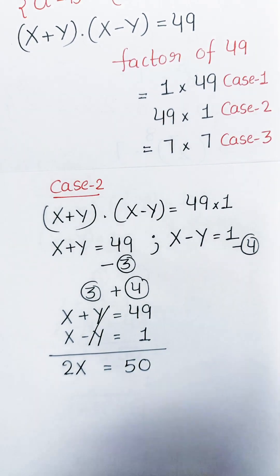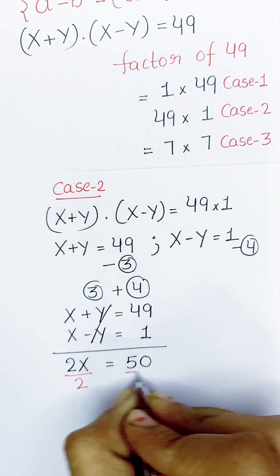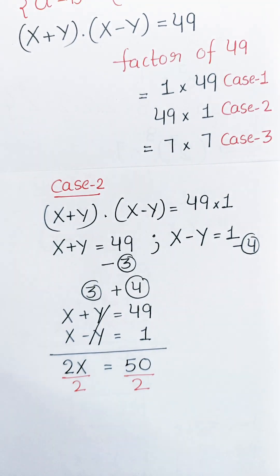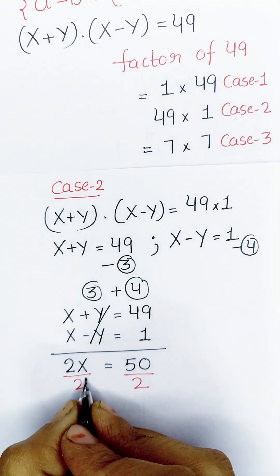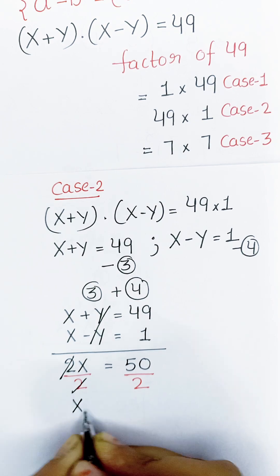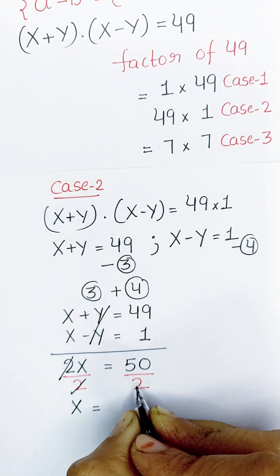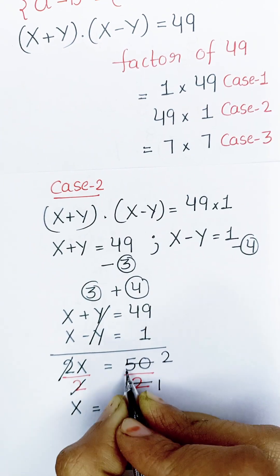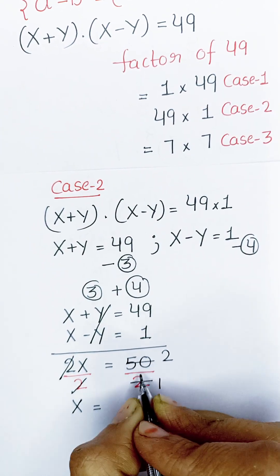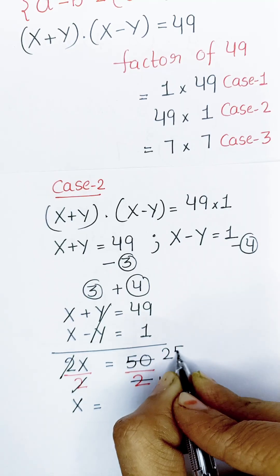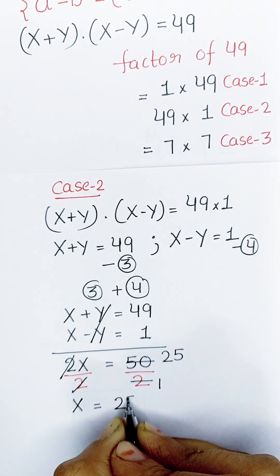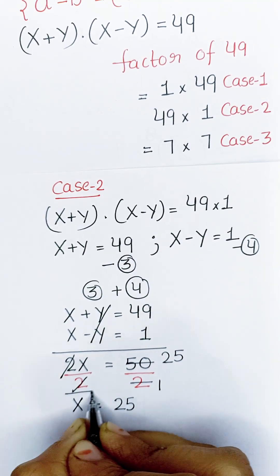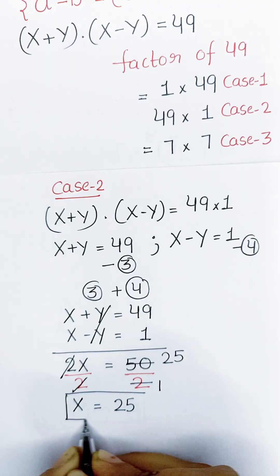Divide both sides by 2. The 2s cancel on the left-hand side leaving x. On the right-hand side, 50 divided by 2 gives 25. So we get x equals 25 again.